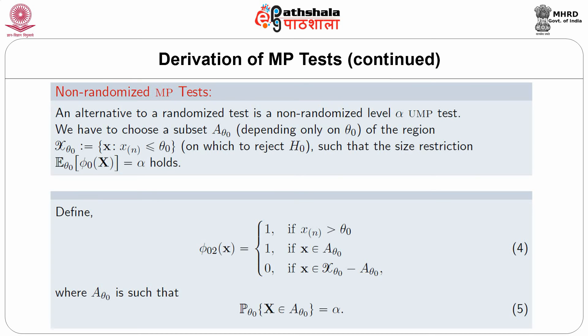In this module we have discussed the problem of testing H₀: θ = θ₀ against H₁: θ > θ₀ for a Uniform(0, θ) population. We have found a uniformly most powerful randomized test and several uniformly most powerful non-randomized tests for H₀ versus H₁. We also see that the uniformly most powerful test is not unique.